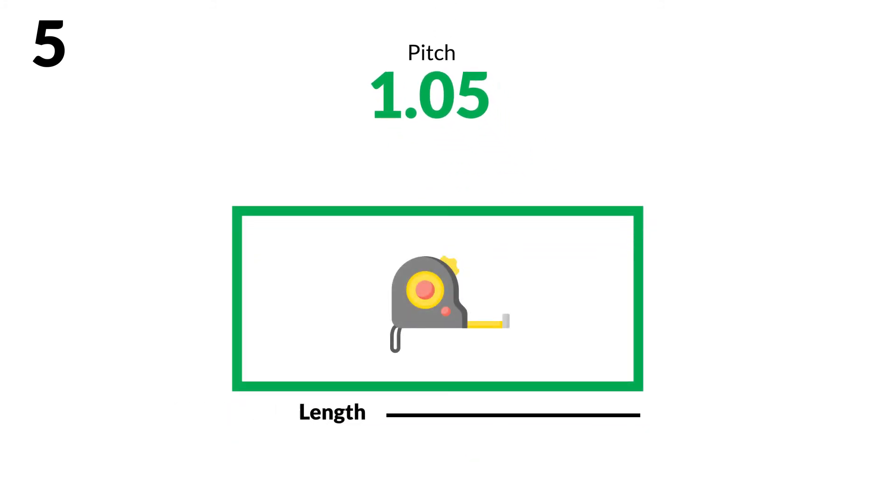Number 5: Use your measuring tape to measure the length of your house. Be sure to include overhangs. Number 6: Measure the width of your house.